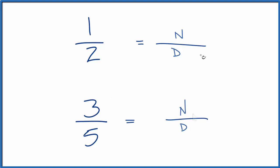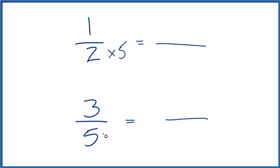Let's do that. 2 times 5 is 10, and 5 times 2 is 10. So I'm going to multiply this fraction by 5 over 5, and down here I'm going to multiply it by 2 over 2. That gives us 10 as the common denominator in both cases.